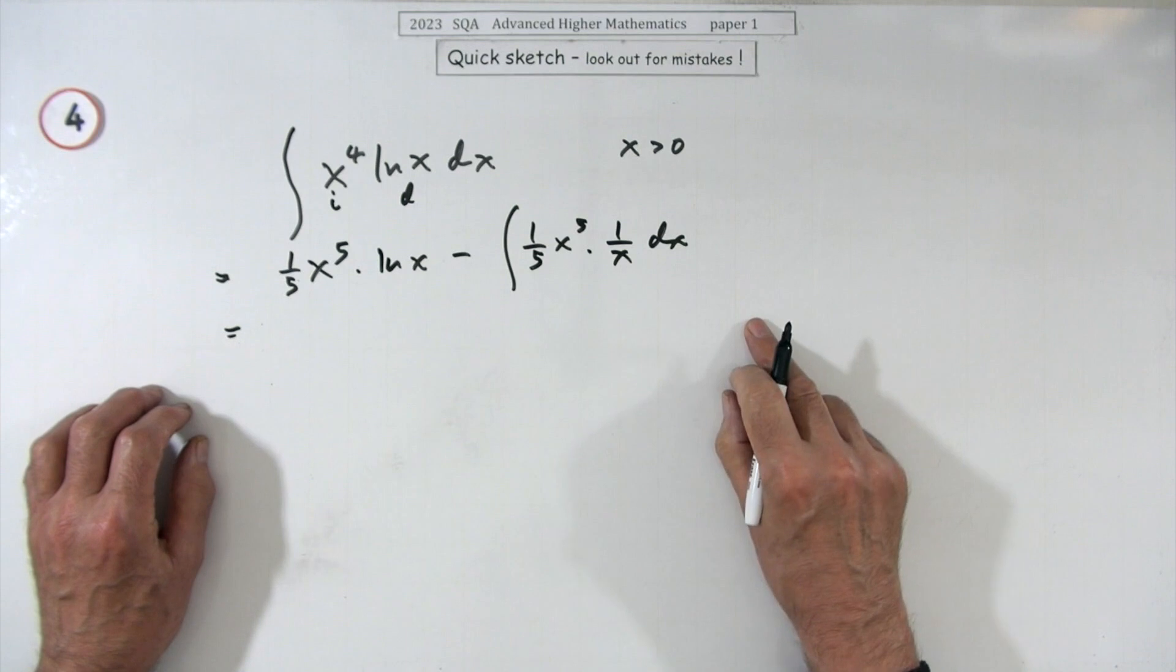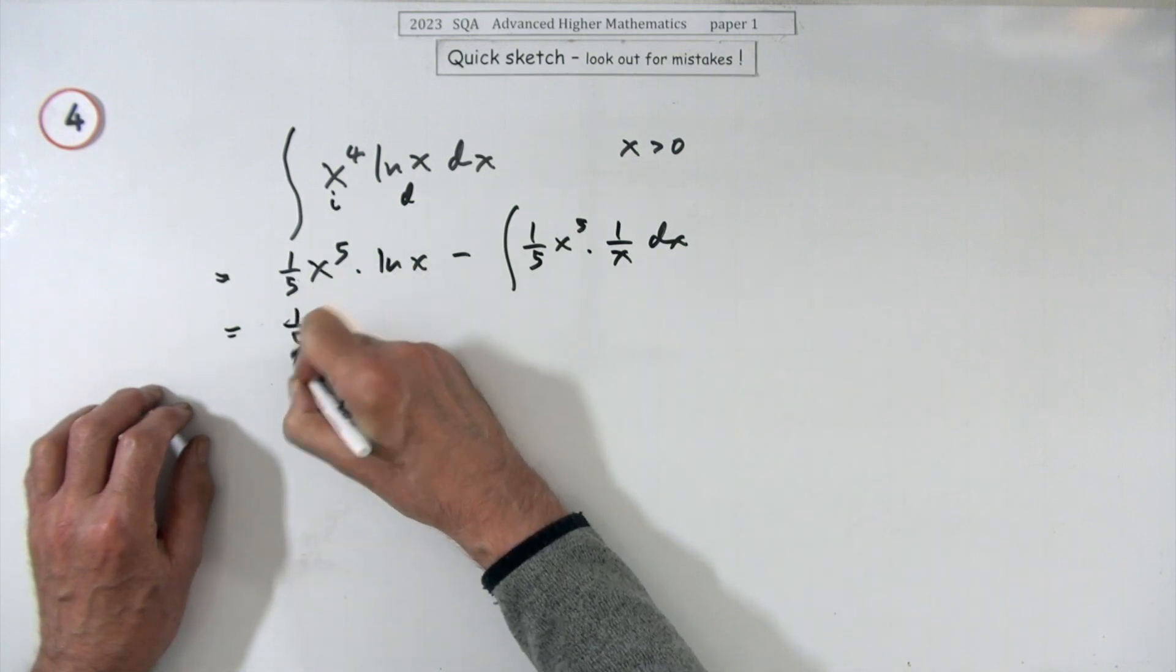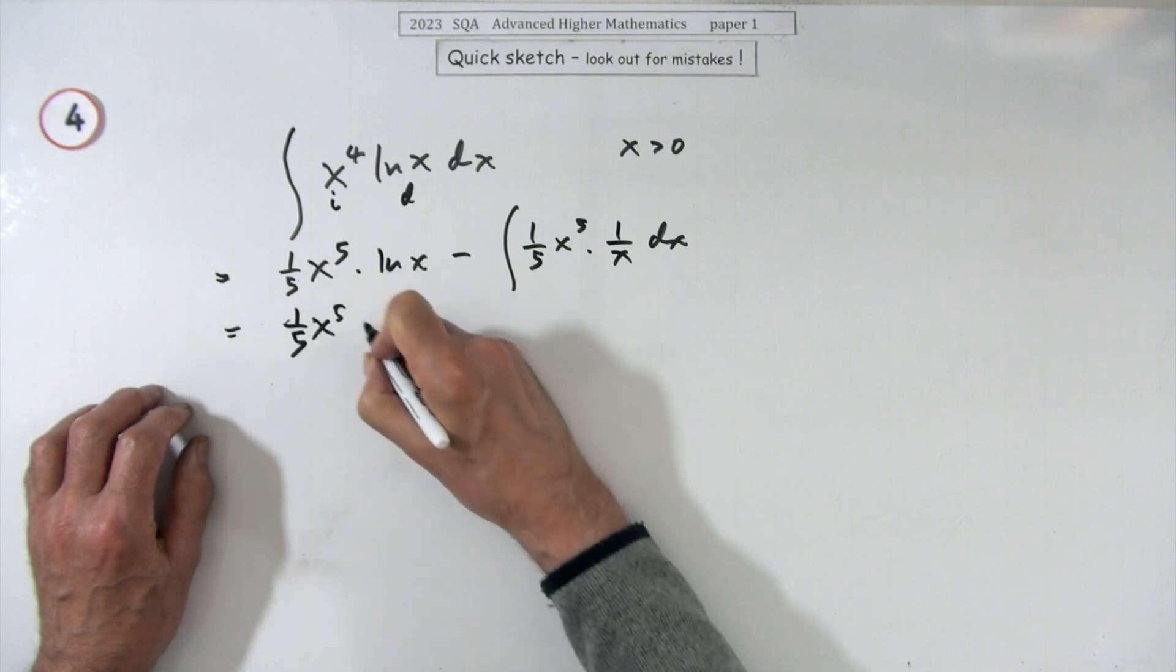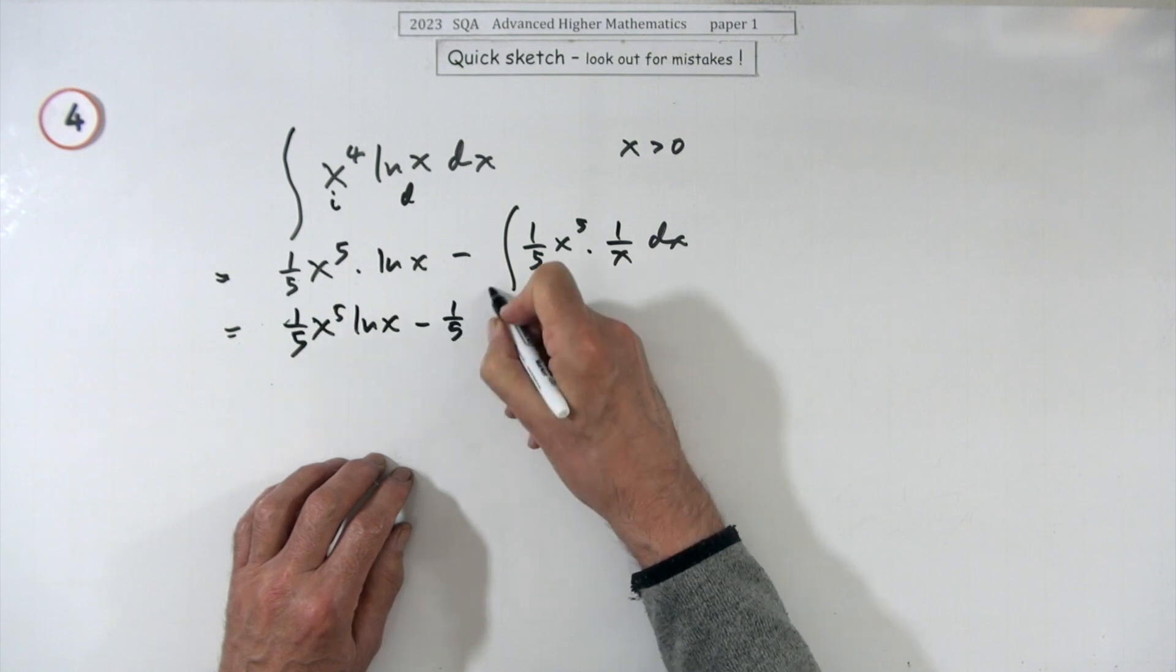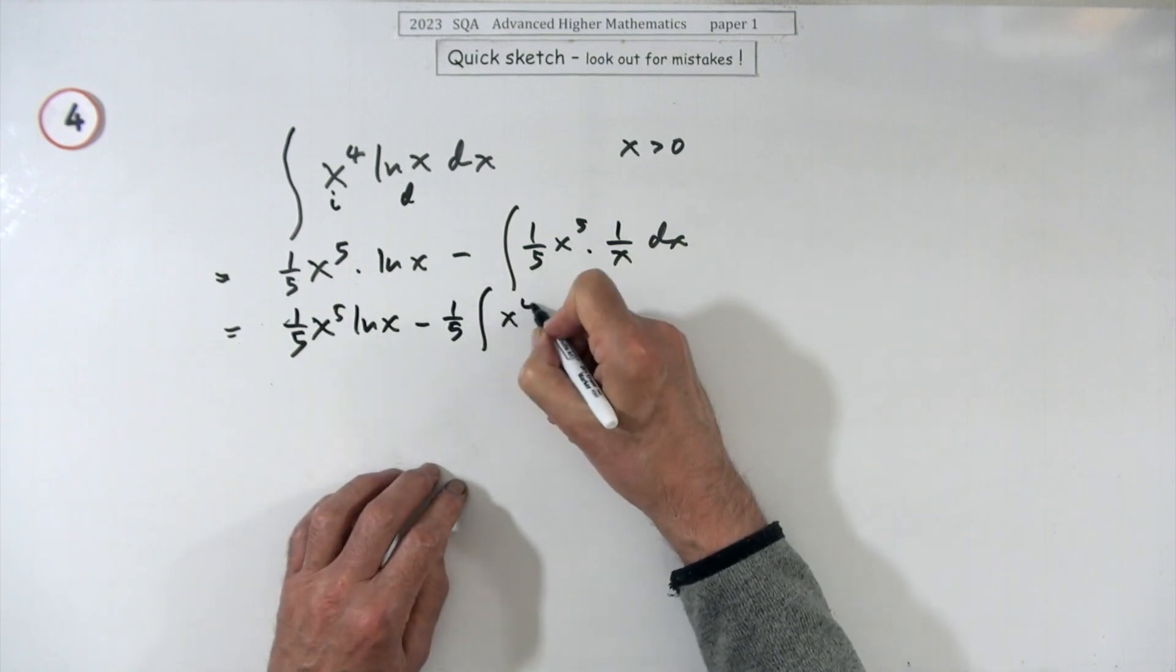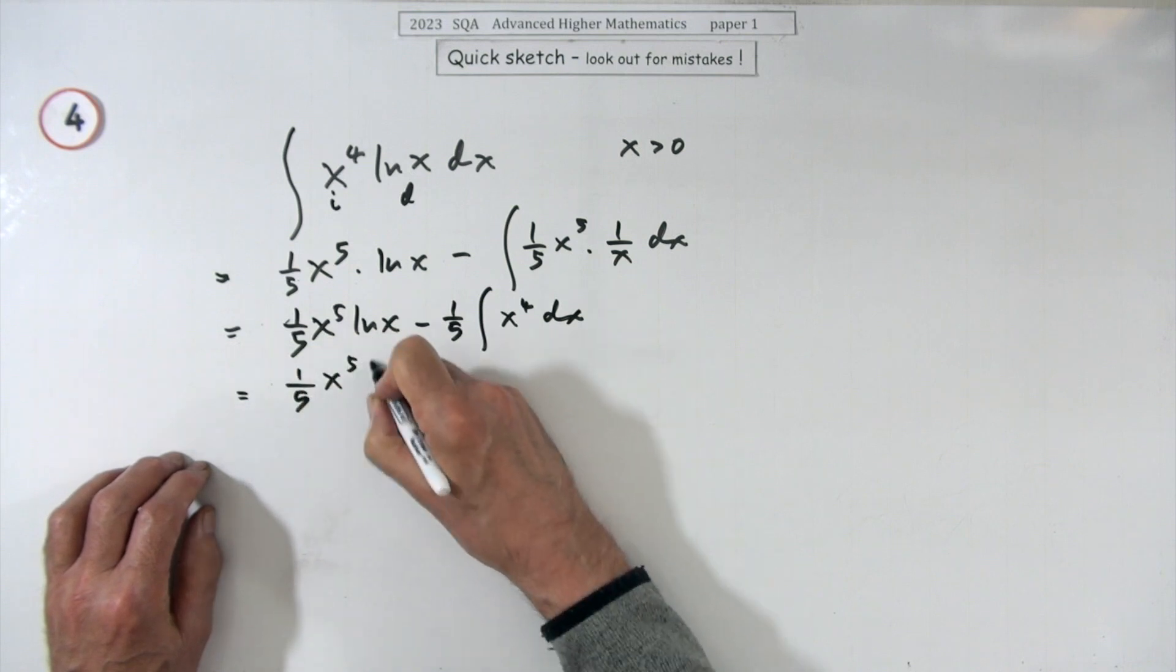You could write your answer straight down from that because you can do all that in your head, but I'll tidy up: one-fifth of x to the five ln x minus one-fifth of—that's good, it's going to be x to the four dx. So you've got one-fifth of x to the five ln x